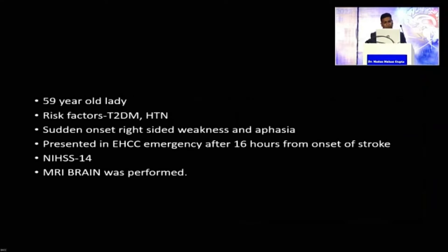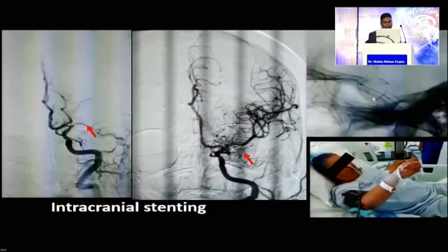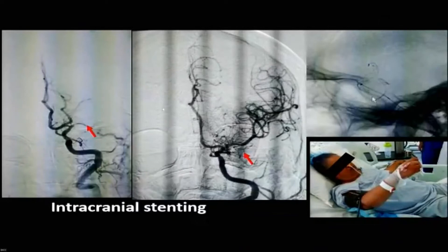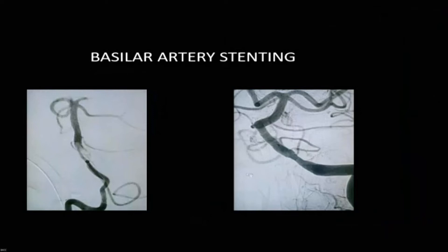Intracranial stenting in acute stroke: a patient came from Kota after 16 hours of stroke. There was an internal watershed infarct; the patient had aphasia and right upper limb weakness. ICAD was found on DSA with distal MCA involvement. After loading, we placed a stent and achieved complete recanalization with TICI 3 flow; the patient was lifting the right upper limb after the procedure. In another case of recurrent TIA with left MCA and distal ICA critical stenosis, we did angioplasty and stenting after failure of best medical management. For the basilar artery with occlusion and stenosis, we also performed stenting and angioplasty.